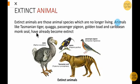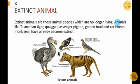These are pictures of some extinct animals: Tasmanian tiger, quagga, passenger pigeon, and golden toad. These are some examples of extinct animals — animals that are no longer found on Earth.